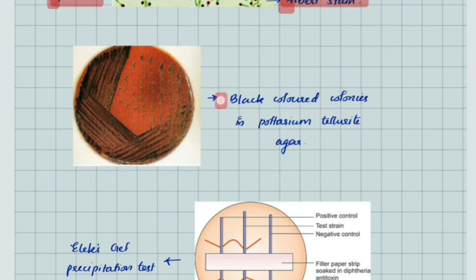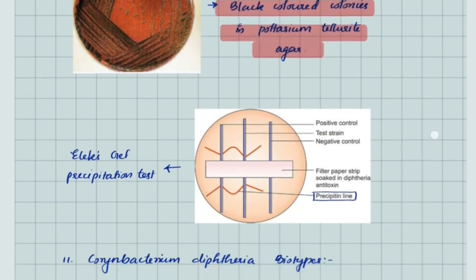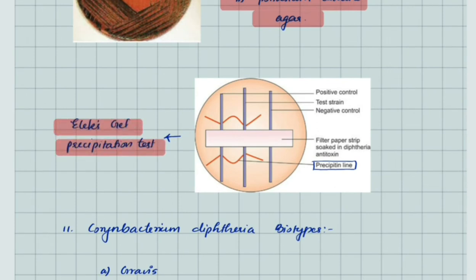Corynebacterium diphtheriae shows black colored colonies in potassium tellurite agar. Next is the Elek gel precipitation test.